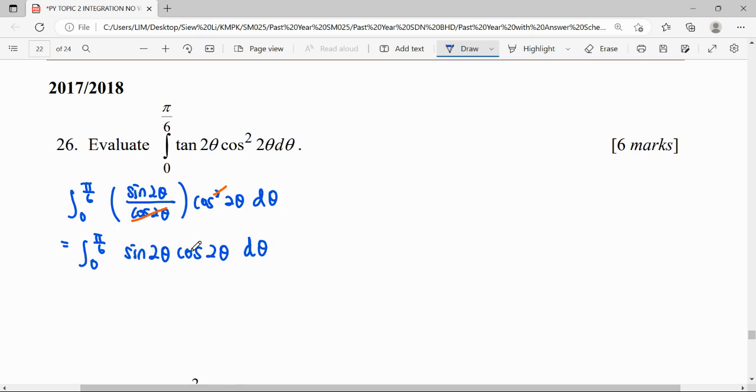When we have a product from our trig goal here, notice that we have the same angle, 2θ and 2θ. If we have different angles, we need to use the product-to-sum formula to change our product form to summation form. For the same angle, we can settle it by using a formula.